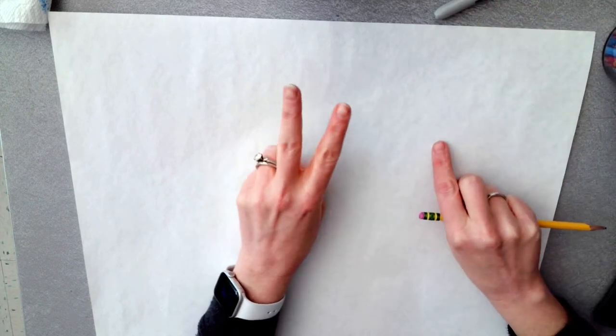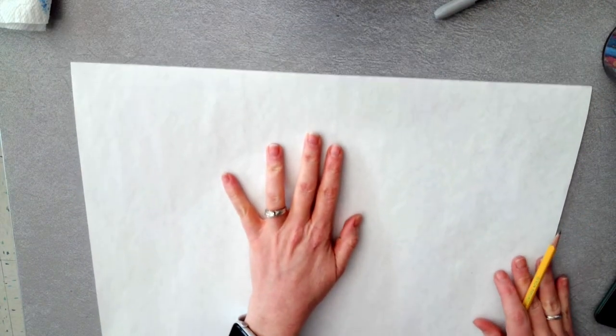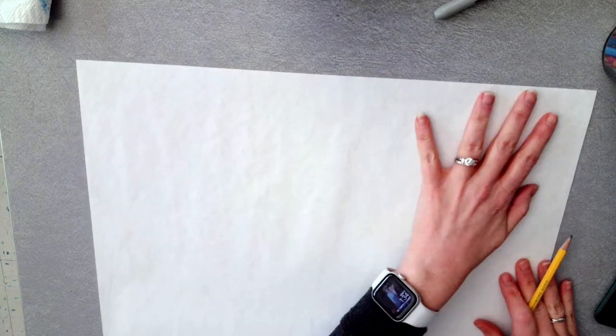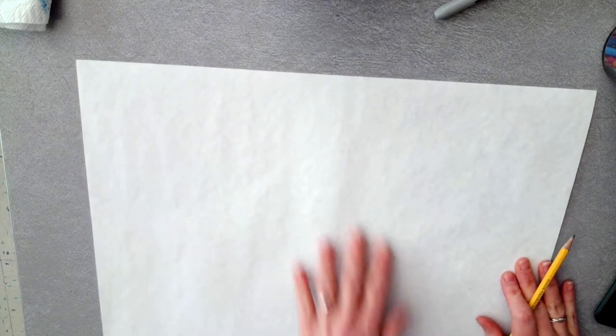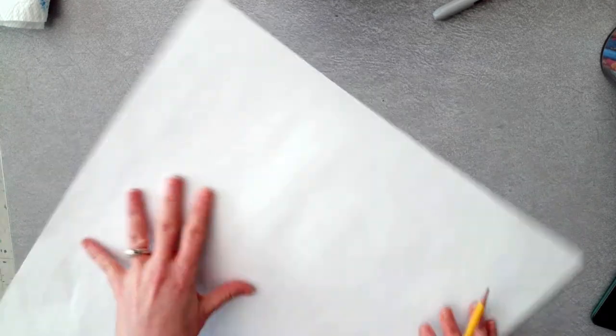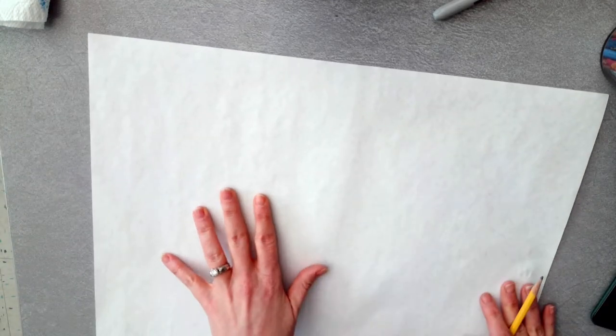You're gonna do two pieces. One, I want your orientation to be vertical—so it's taller than it is wider. The other one I want horizontal—longer than it is tall. I know you're not gonna be able to see my entire paper. I just want you to kind of go with it.